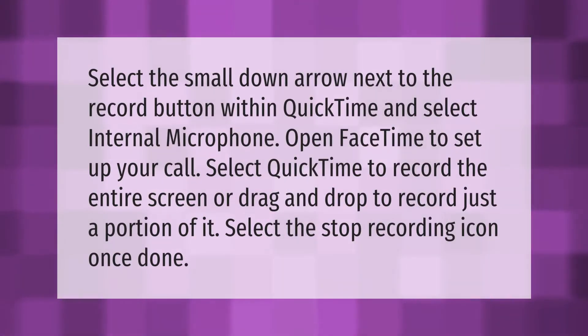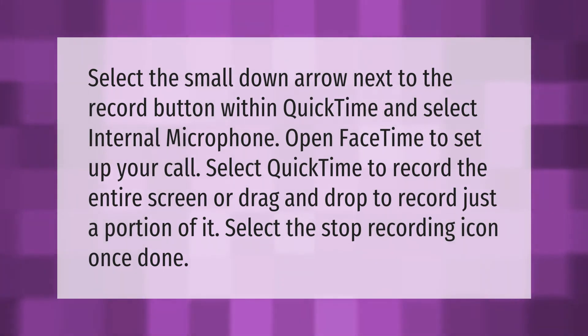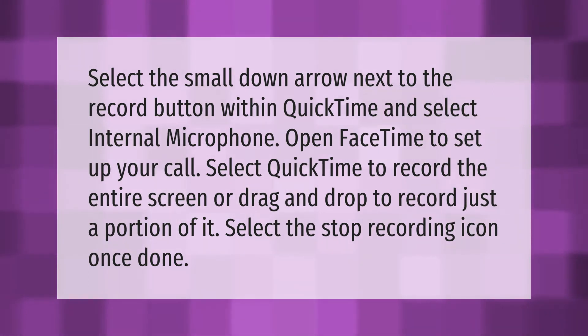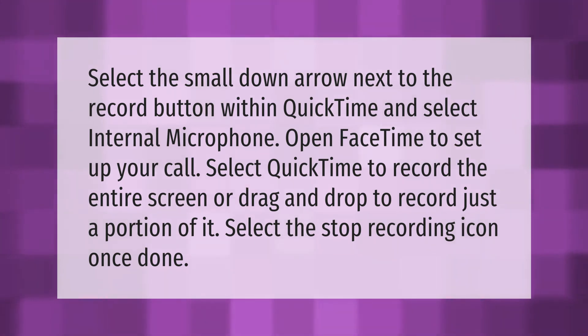Select the small down arrow next to the record button within QuickTime and select internal microphone. Open FaceTime to set up your call, then select QuickTime to record the entire screen, or drag and drop to record just a portion of it. Select the stop recording icon once done.